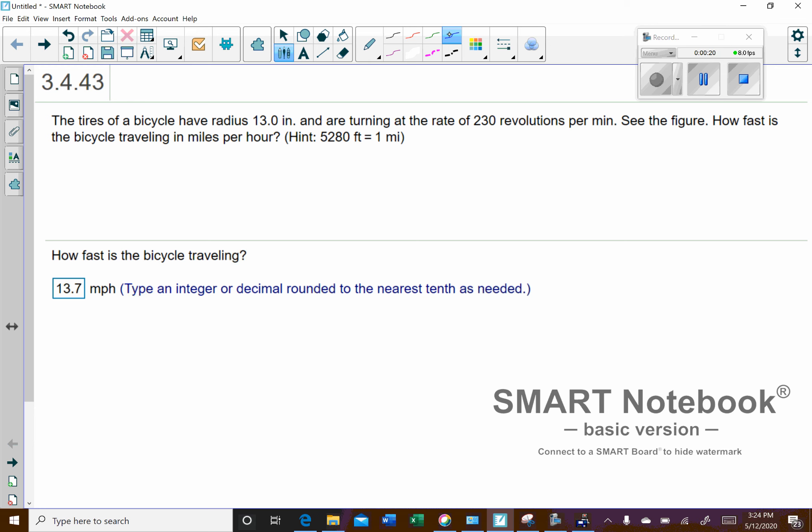So really, there's quite a few conversions we have to do here. What we want to do is first figure out the circumference of the tire, because every revolution is how far the bike is going to travel—the circumference. So every revolution, you're going to multiply by the circumference.